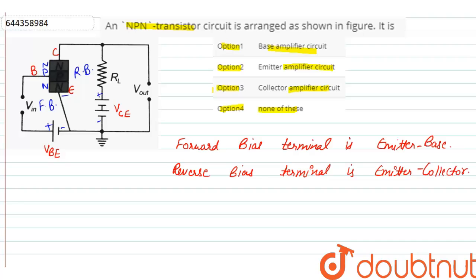So we can clearly see that this is emitter amplifier circuit. So this figure is emitter amplifier circuit.